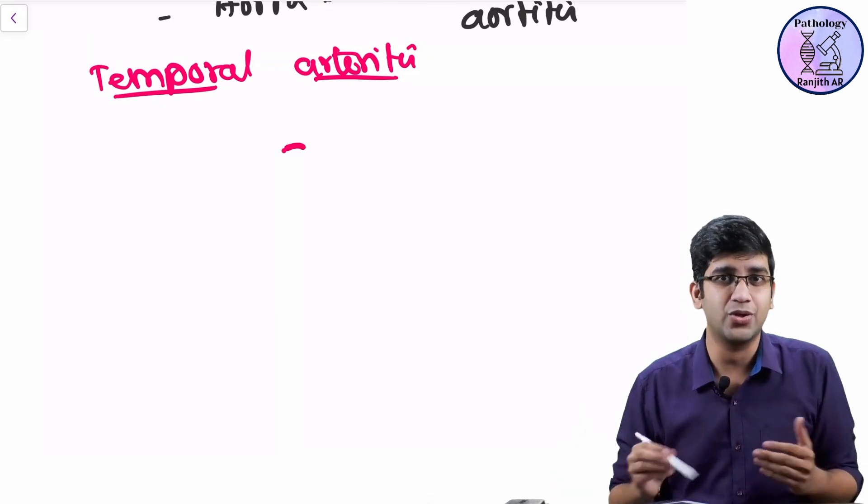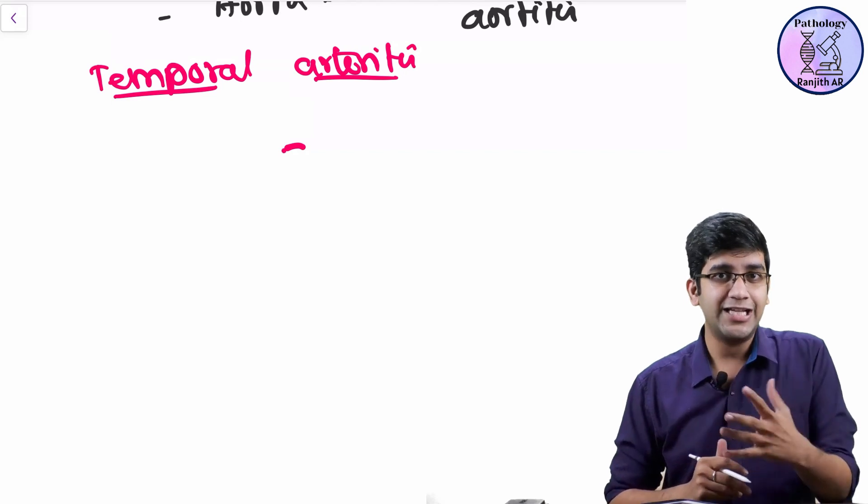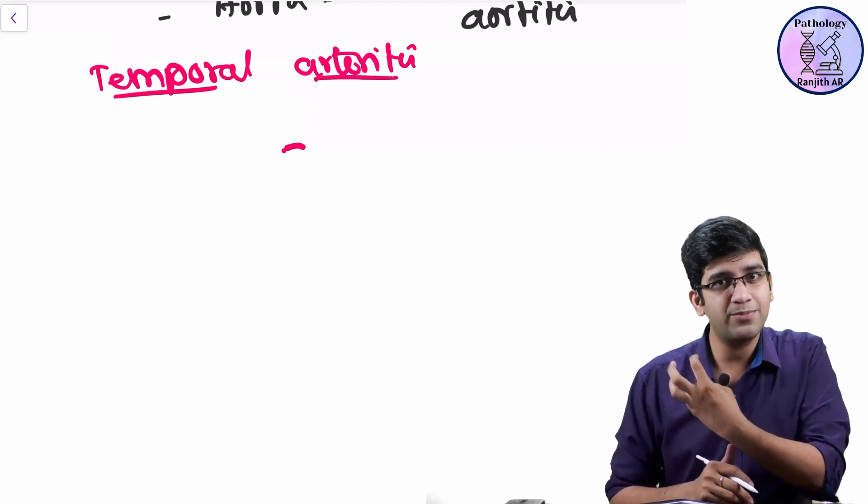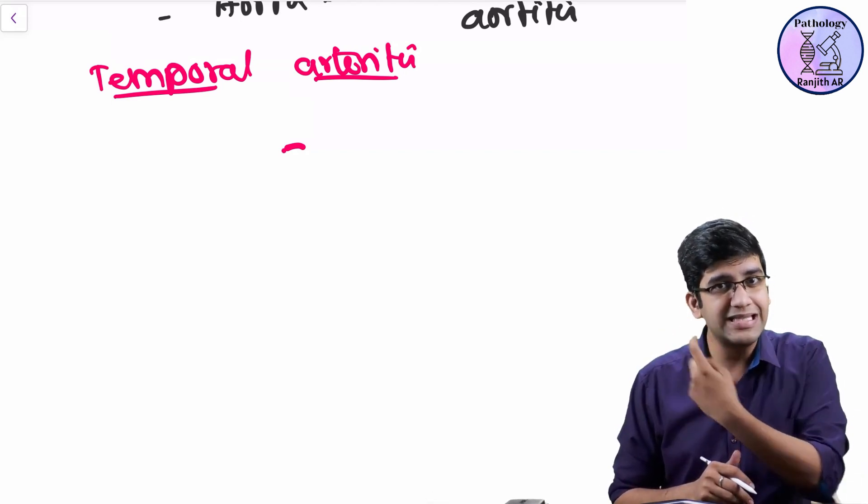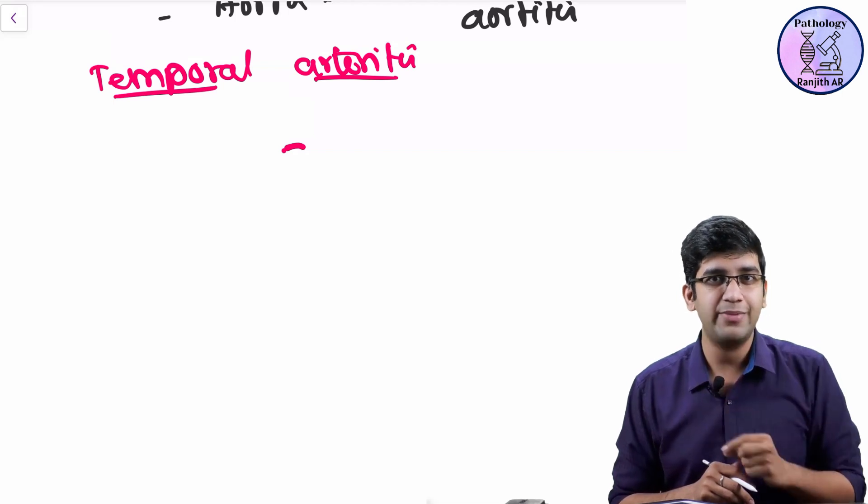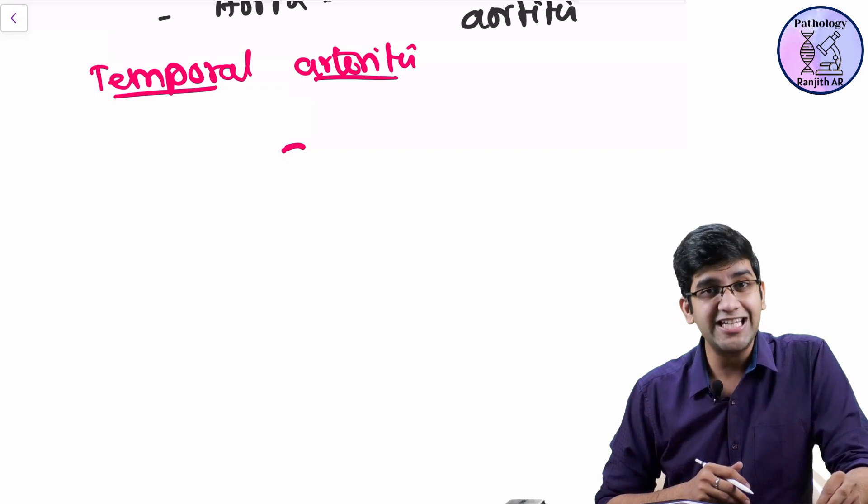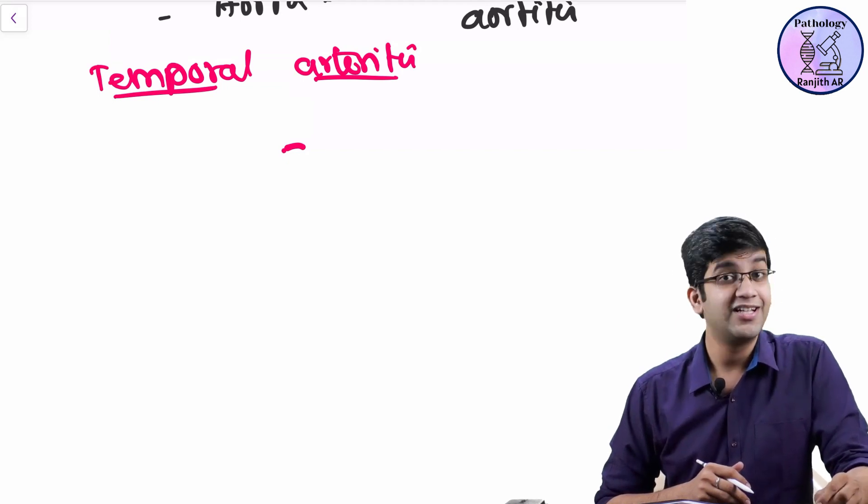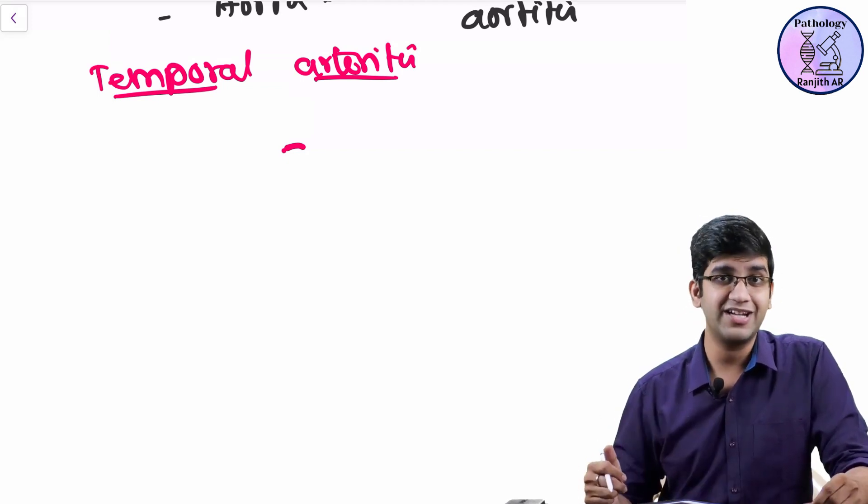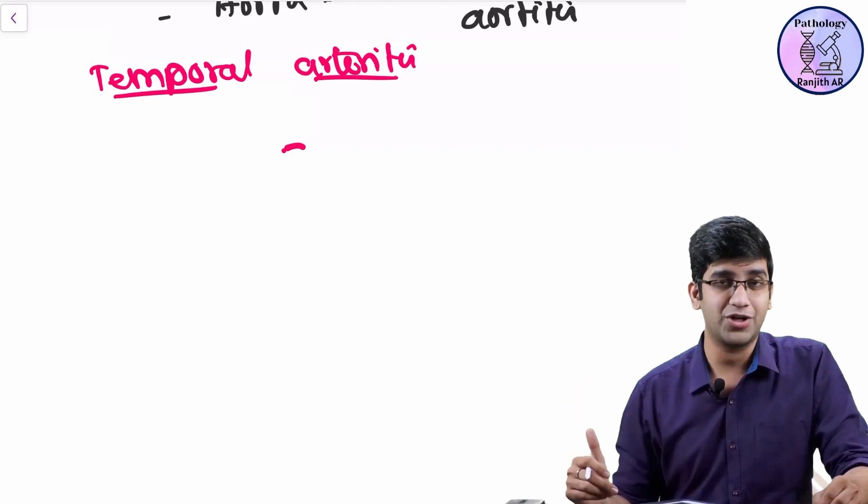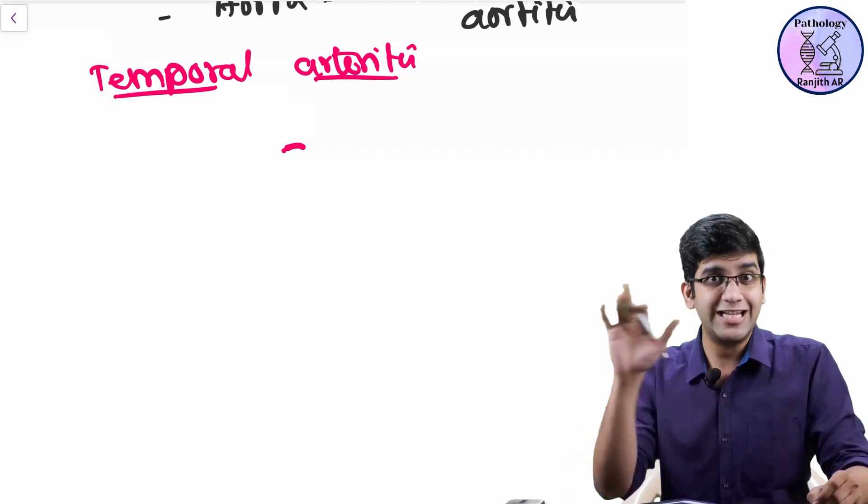We gave MCQs just for us to understand. Why I am giving so many MCQs on the symptoms is if I miss these two, it can go to my ophthalmic artery and it will cause permanent blindness because of our inefficiency. I should not miss it. A person should not become blind because of us. That's the reason this is very important.